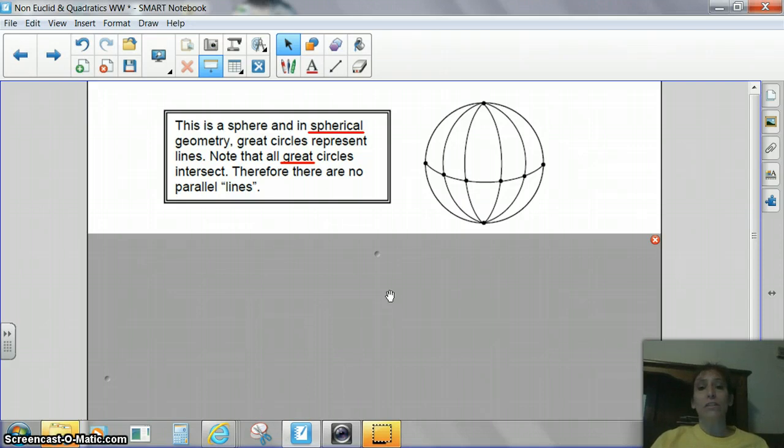Now, each of the lines going up and down are also cutting the circle in half. They are also great circles, but they are actually the longitude lines of a globe. So, it says that note that all great circles intersect. And if you notice, they intersect at the top and the bottom. So, there are no parallel lines in spherical geometry.